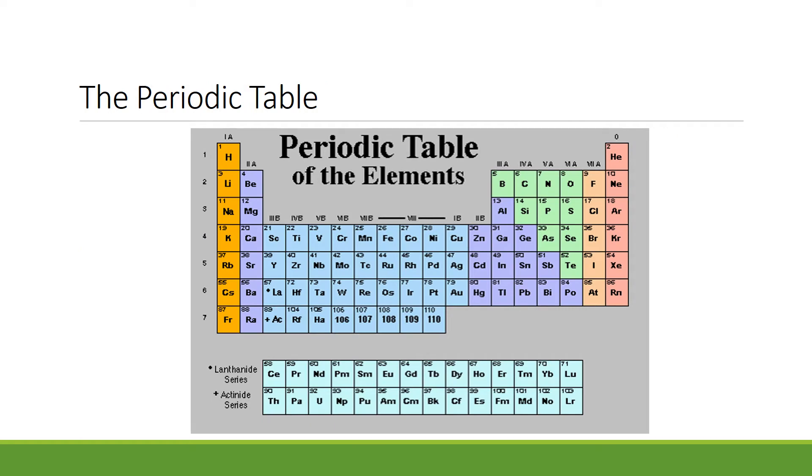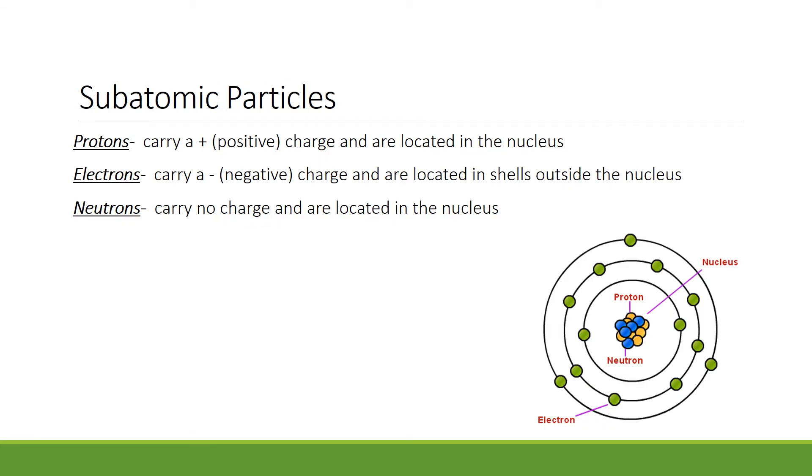This shows you the ordered arrangement of atoms in the periodic table. An atom, seen on the right, is composed of three subatomic particles: protons, which carry a positive charge and are located in the nucleus, and electrons, that carry a negative charge and are located in the shells outside the nucleus.